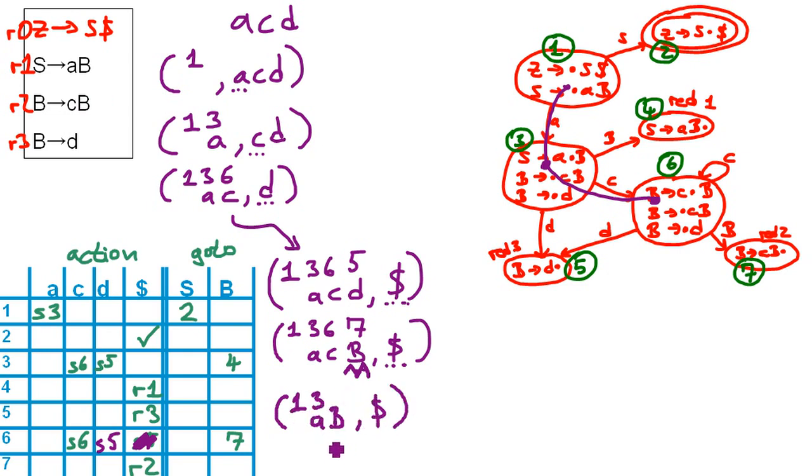Again, no state here. We check out the B in here and in state number three. So we figure, okay, we have to go to state number four. Oh, by the way, we can do this here as well.